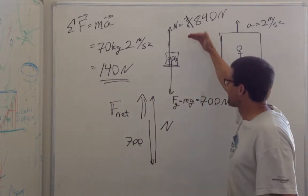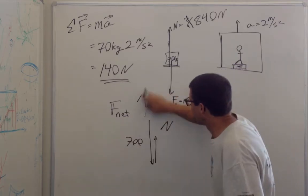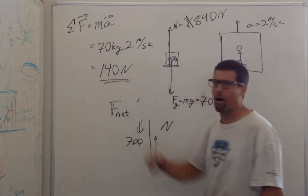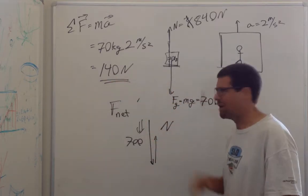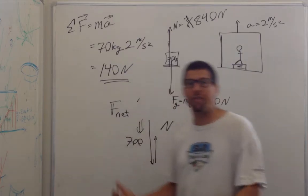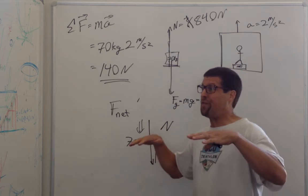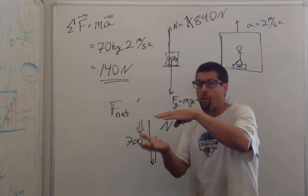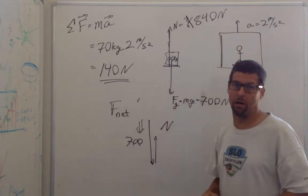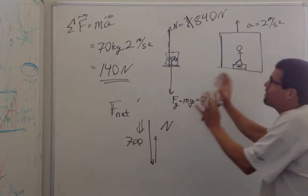So if you were accelerating downward, then this normal force would have to be less than 700 newtons by that 140 newtons, 560 newtons. And you know you feel that when you're moving upwards in an elevator and you come to a rest. You feel the normal force under you drop, and so it allows you to accelerate downward to come to rest.